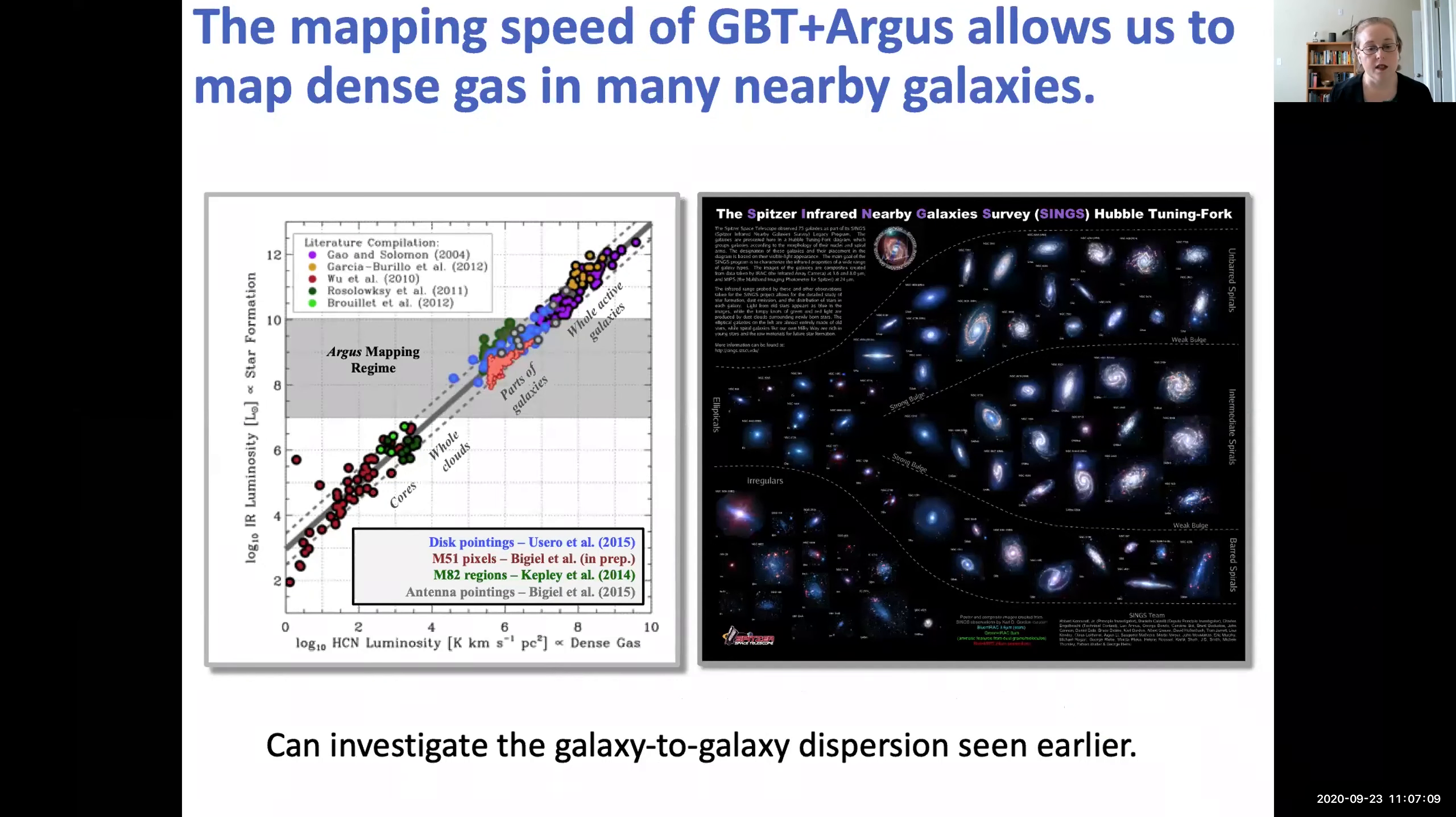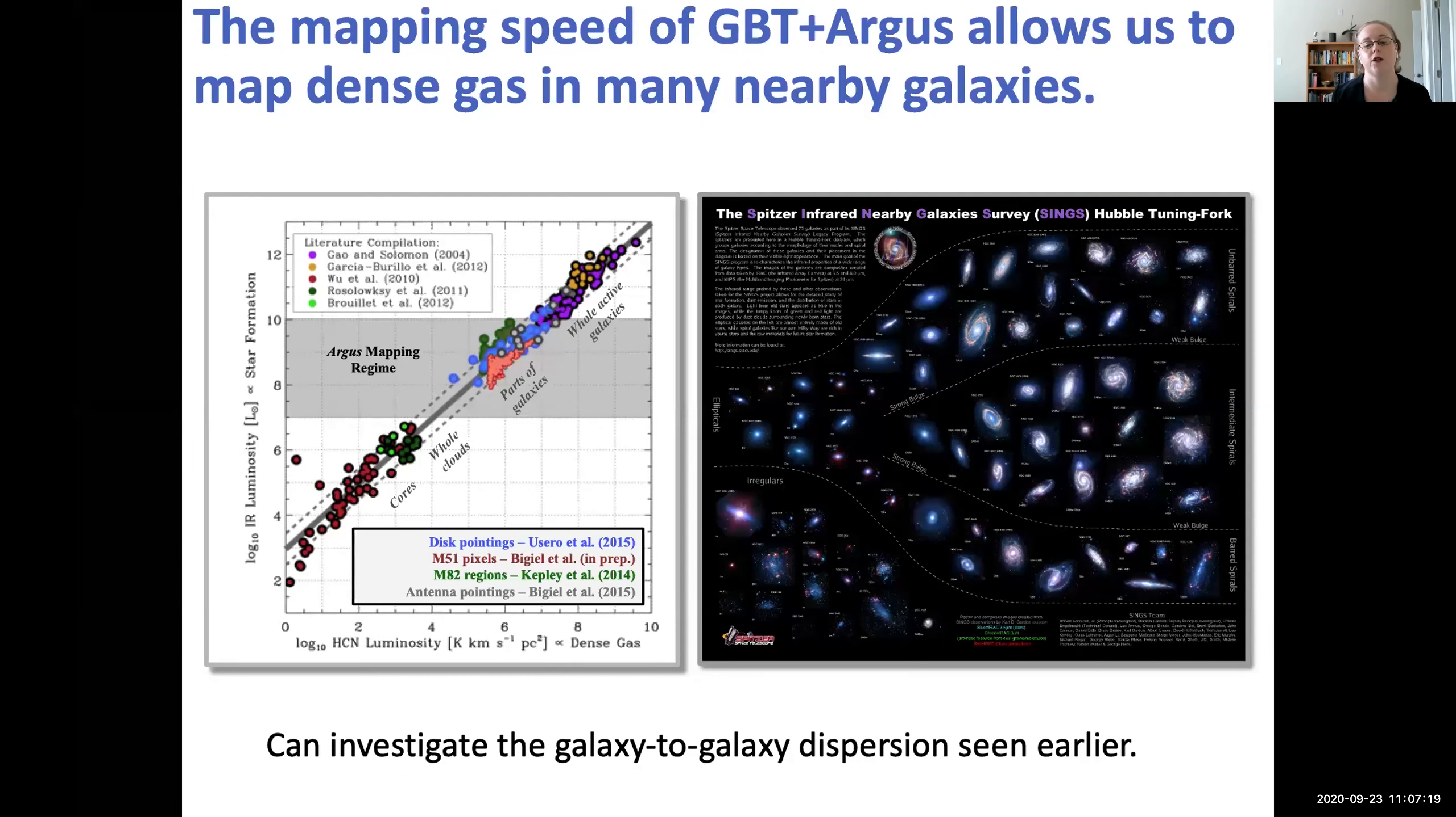So this is where GBT plus Argus comes in. And the mapping speed of GBT plus Argus really allows us to go after these galaxy to galaxy dispersions that we saw earlier. We can start mapping larger samples of galaxies at moderate resolution and sort of start to pull apart the physics that was driving these galaxy to galaxy dispersions.